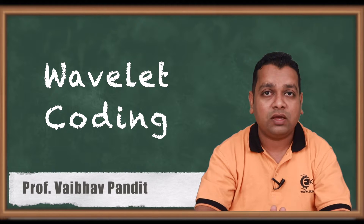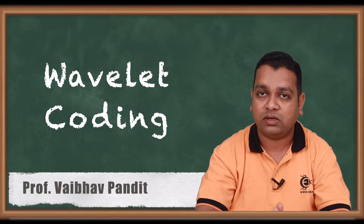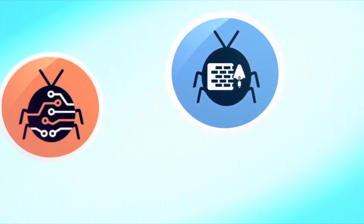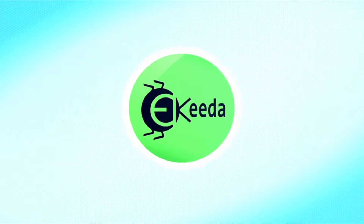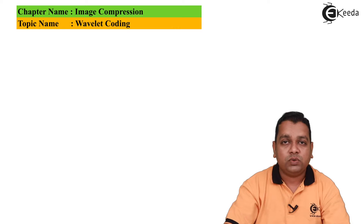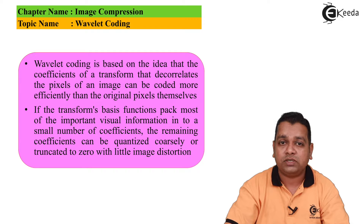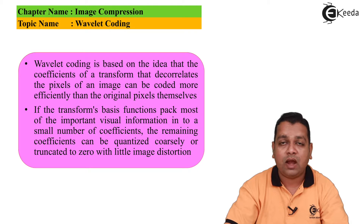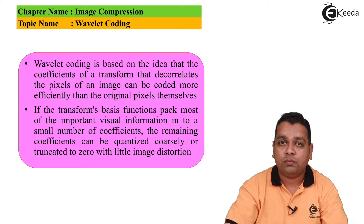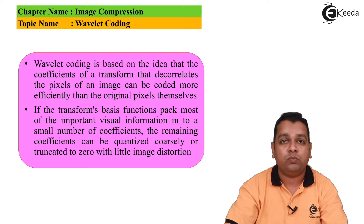Now let us understand Wavelet coding so that we can also understand JPEG 2000, which is another image compression standard based on this particular coding type. Wavelet coding is based on the idea that the coefficients of the transform that decorrelates the pixels of an image can be coded more efficiently than the original pixels themselves. The Wavelet family and the Fourier family have already been compared in chapter three on image transforms, where we know the basic differences with respect to the basis vectors with which reconstruction is made possible in both of these mathematical tools.